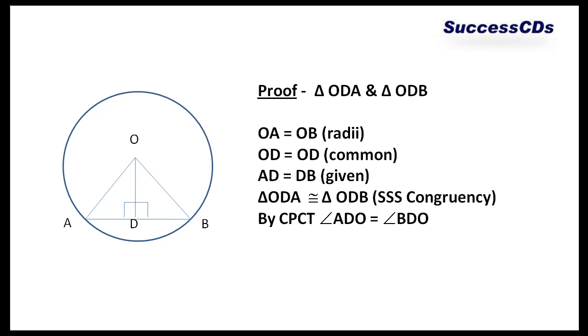Now, let's go on towards the proof. In triangle ODA and triangle ODB, here OA equals OB. Why? Radii of the same circle. OD equals OD, common side. AD equals DB.